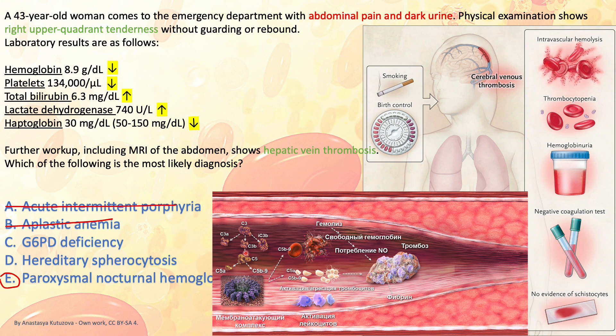The pathogenesis of PNH is a deficiency of a complement inhibitor, so complement is always activated to break down not just red blood cells but all blood cells, causing intravascular hemolysis. As for G6PD deficiency — that's an X-linked condition seen almost exclusively in males.